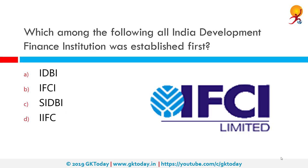Which among the following All India Development Finance Institutions was established first? The correct answer is IFCI. IFCI, previously the Industrial Finance Corporation of India, is a non-banking finance company in the public sector. Established in 1948 as a statutory corporation, IFCI is currently a company listed on BSE and NSE. IFCI manages seven subsidiaries and one associate under its fold.